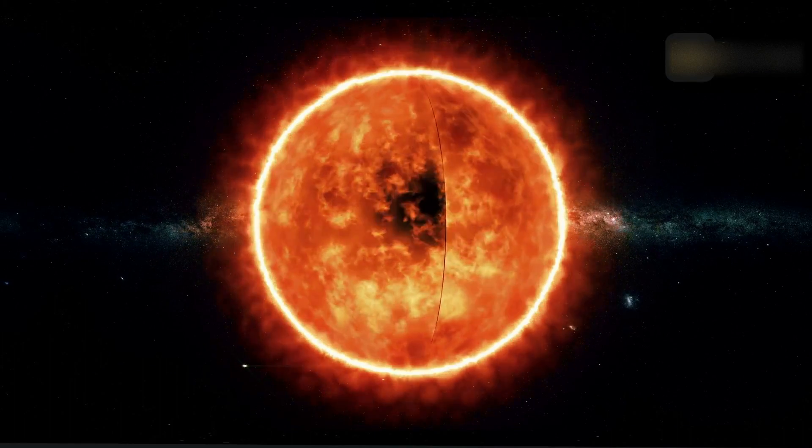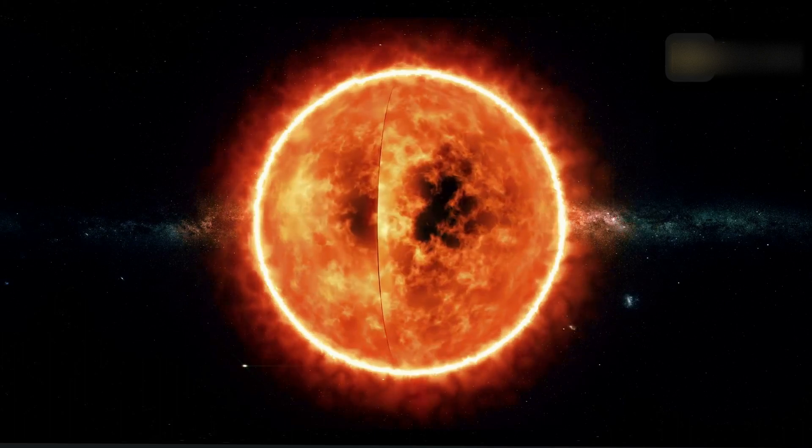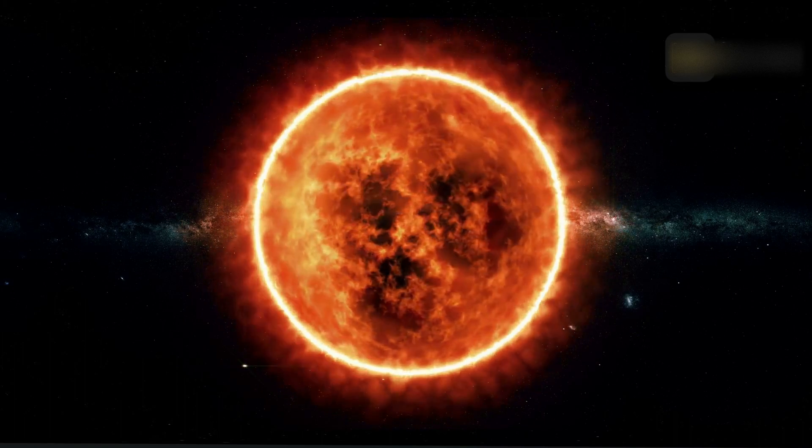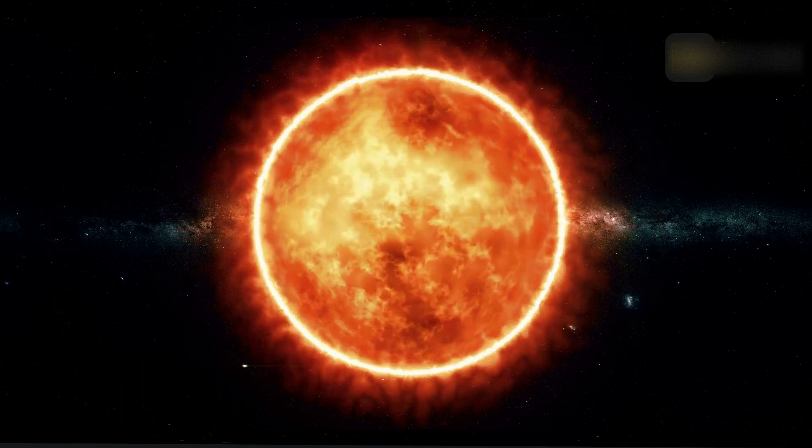Although studies suggest Carrington-class solar storms occur every 40 to 60 years, scientists are keeping a close eye on this ever-growing sunspot while it continues to face Earth.